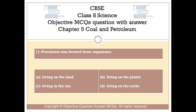Question number 11. Petroleum was formed from organisms — Option A: Living on the land. Option B: Living on the plants. Option C: Living in the sea. Option D: Living on the rocks.